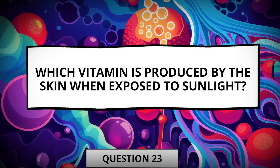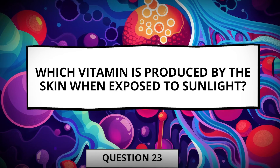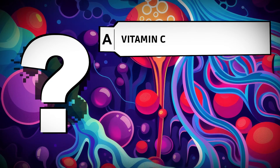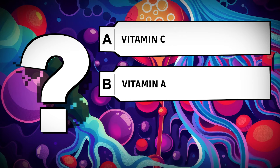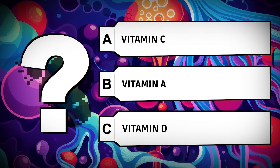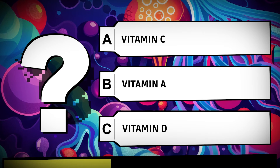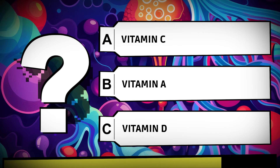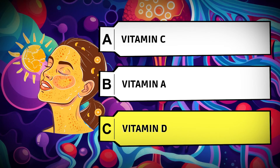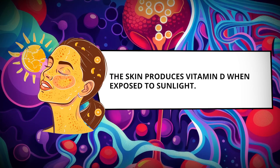Which vitamin is produced by the skin when exposed to sunlight? Vitamin C. Vitamin A. Vitamin D. The skin produces vitamin D when exposed to sunlight.